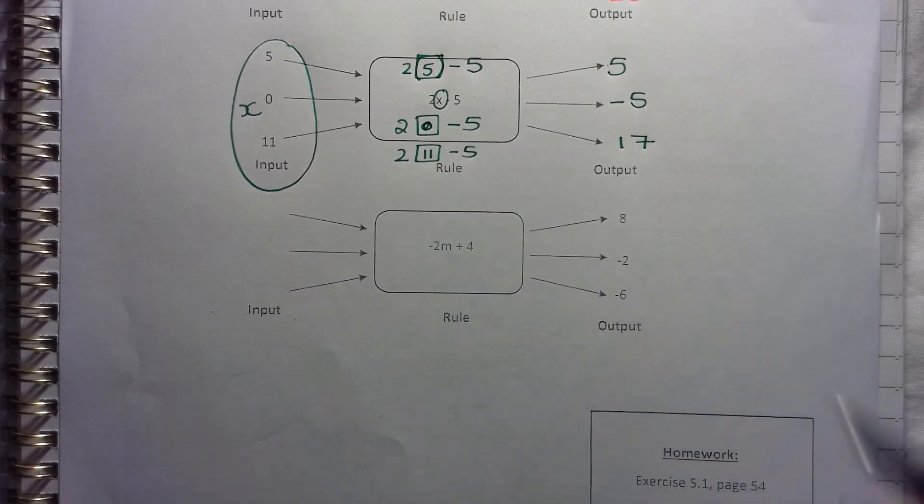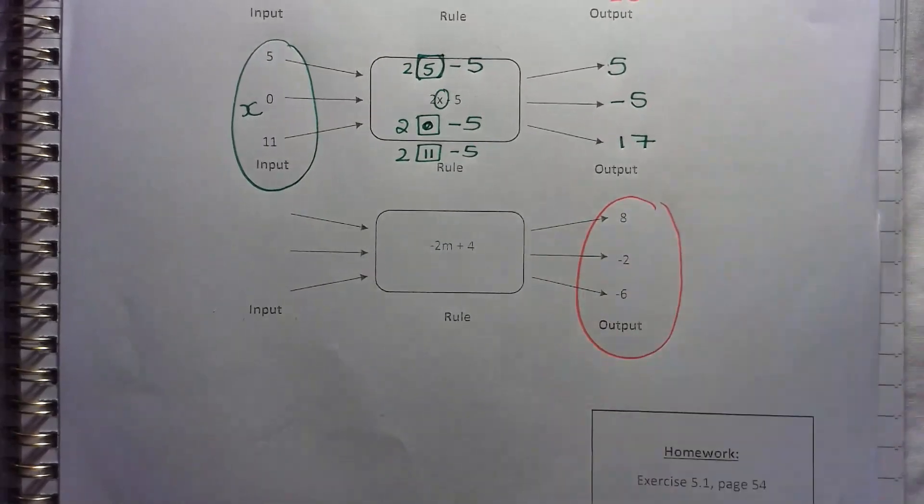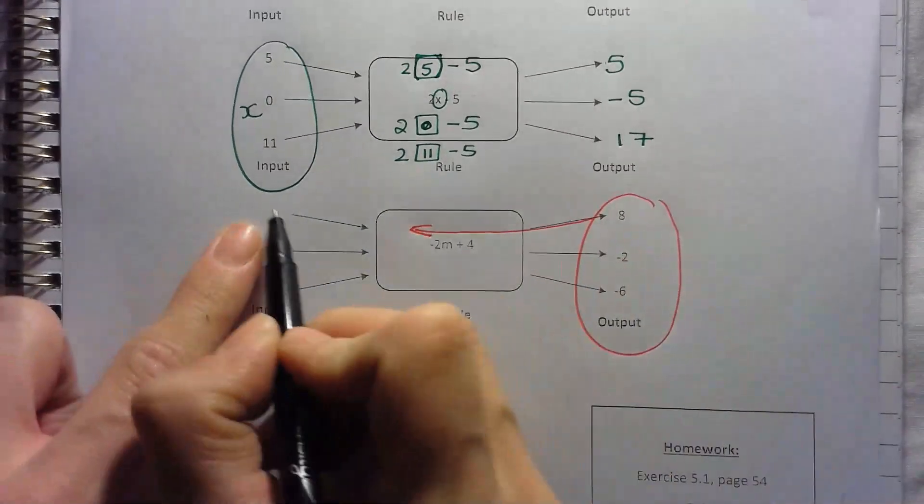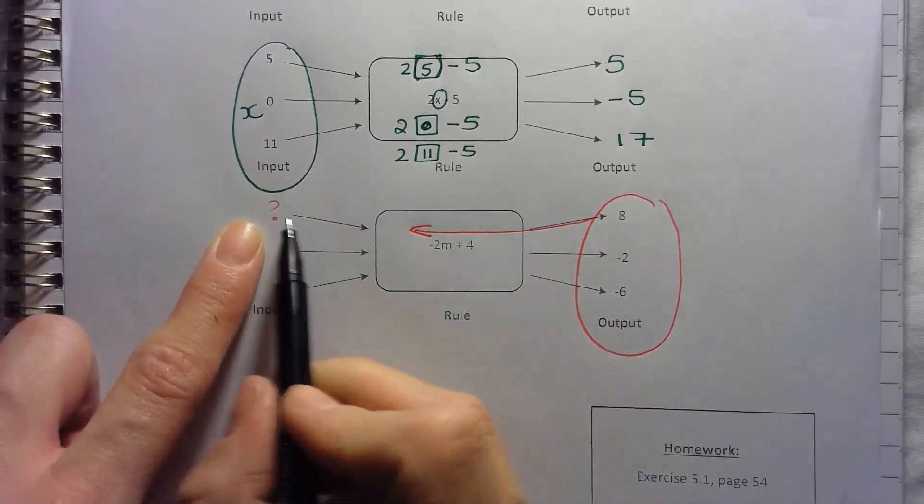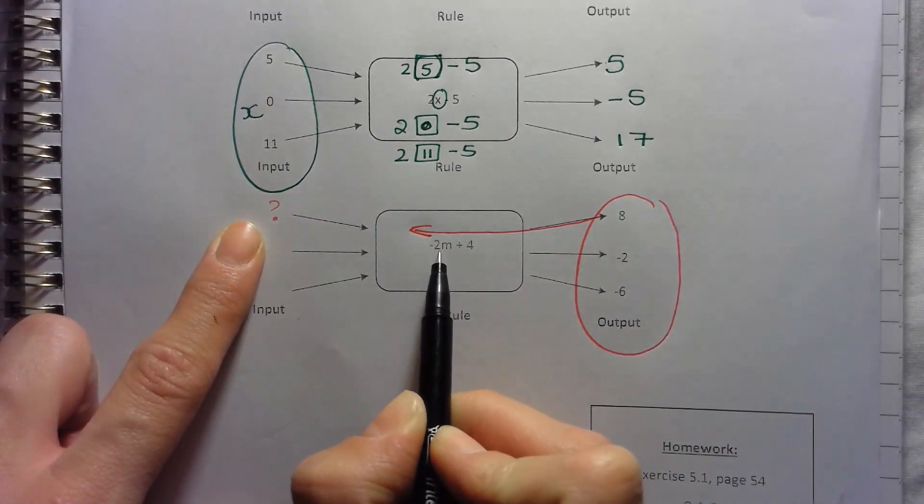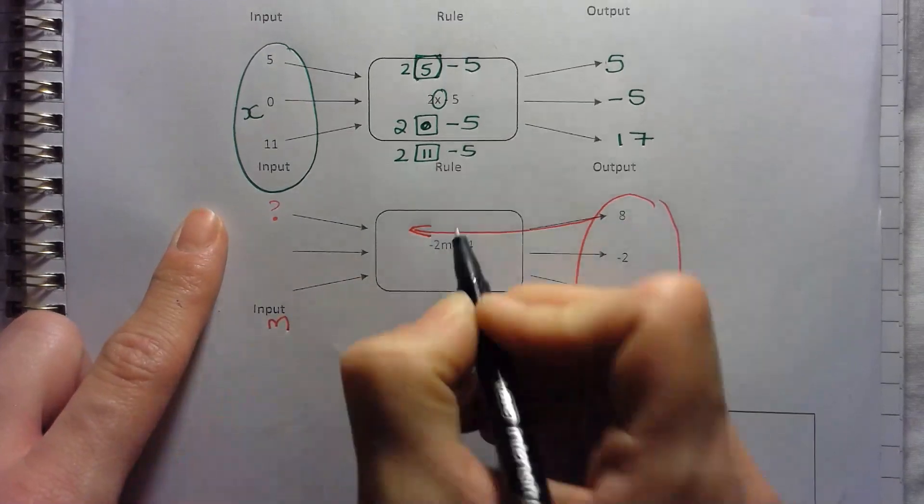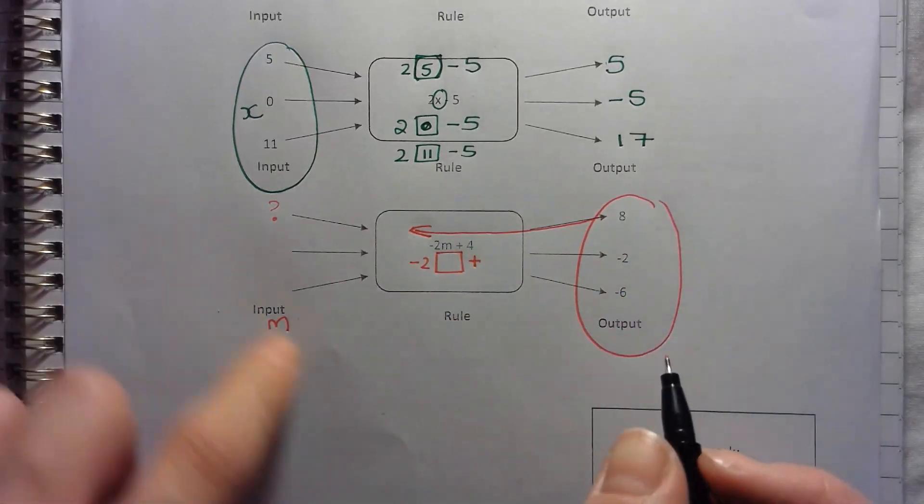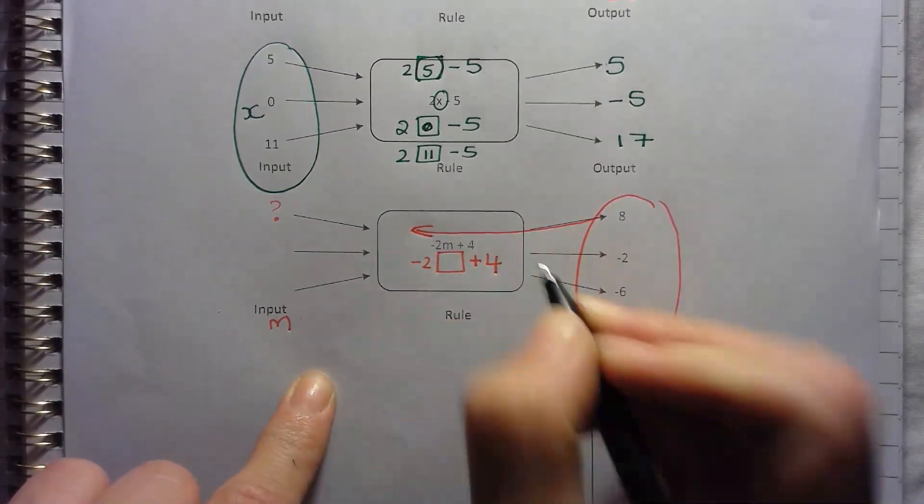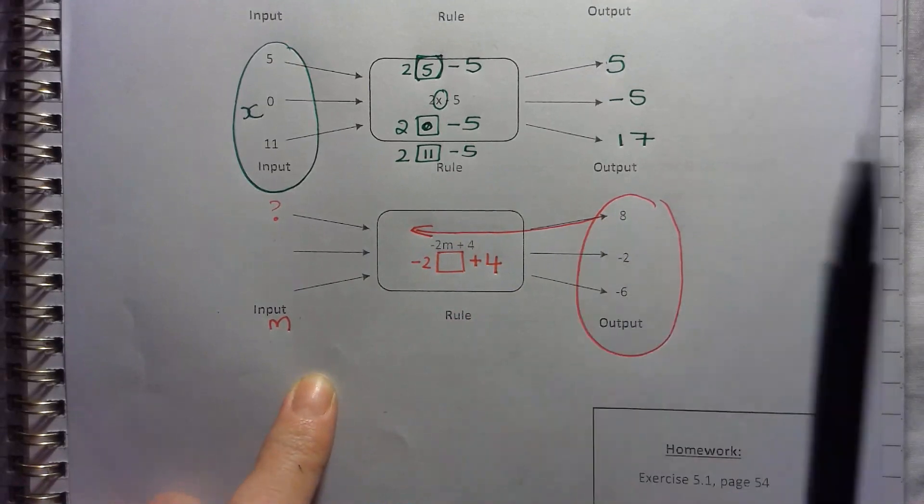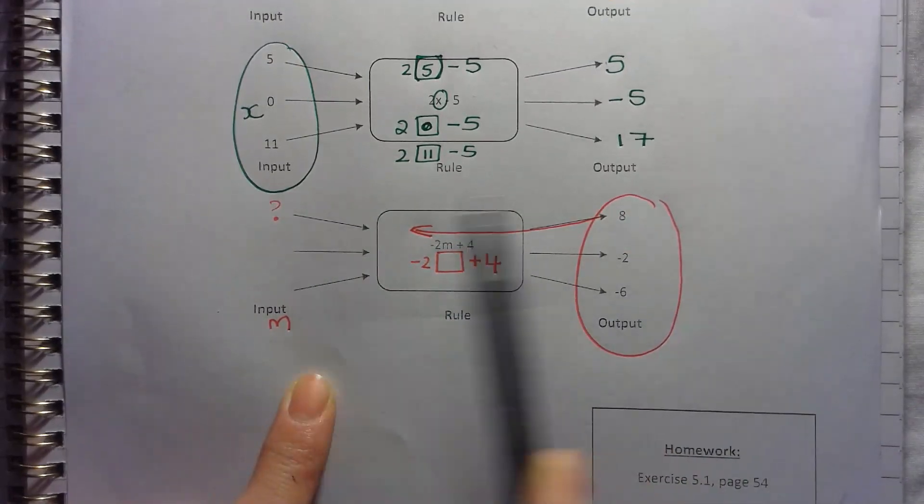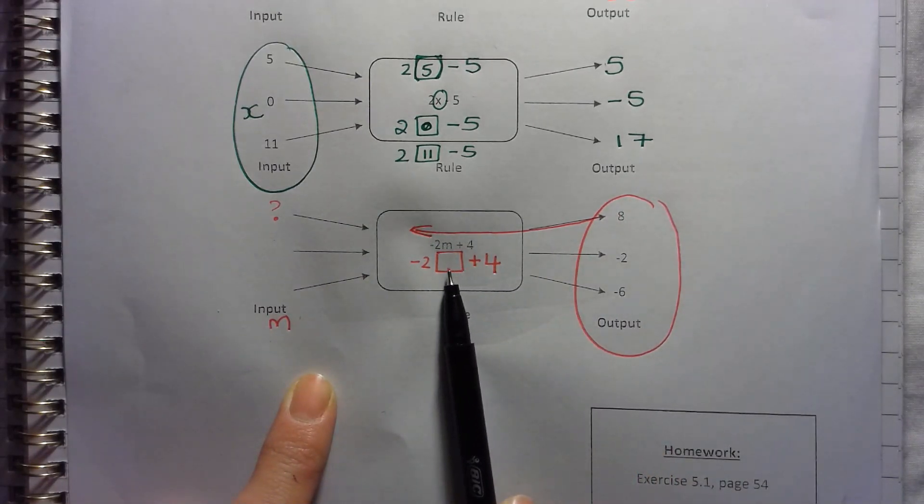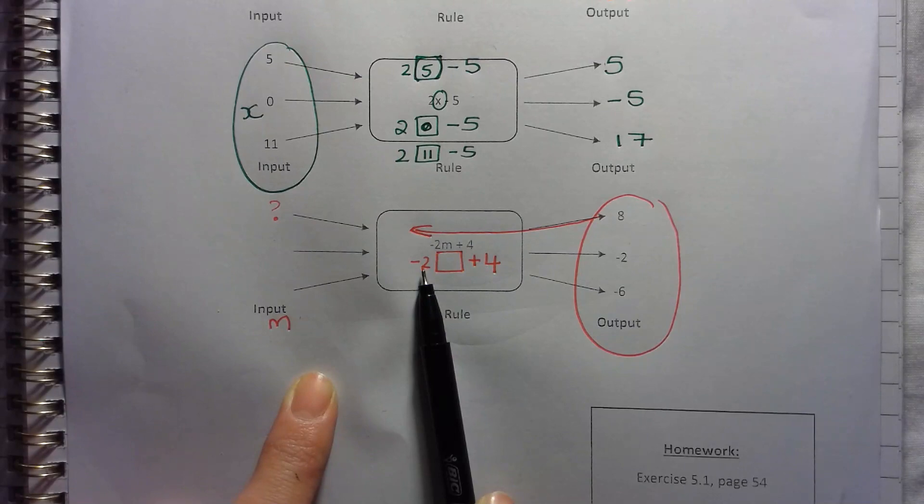Now for the last one, it's a bit trickier because it's asking you to go backwards from the output. So you've got to go backwards along here. So you've got to think something, question mark, went in, was multiplied by negative 2. So these are representing the M values. So negative 2 was times by something, an input value, and then 4 was added to it. So now if we need to go backwards, we've got to undo the rule. So we've got to go 8, and instead of adding 4, we've got to take away 4, and then instead of multiplying by negative 2, we've got to divide.